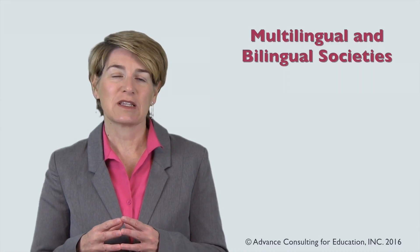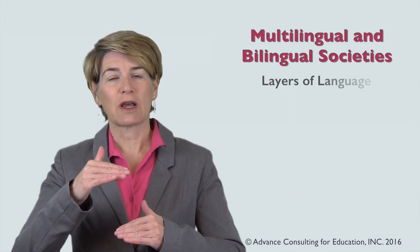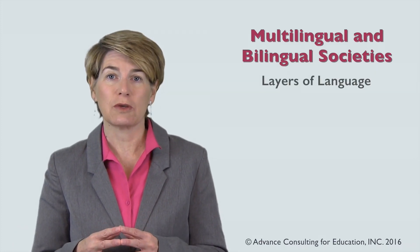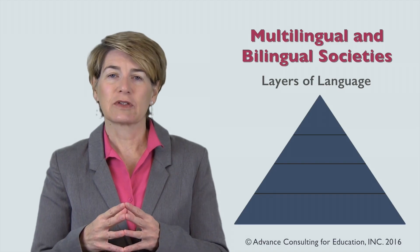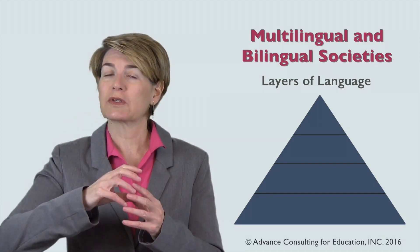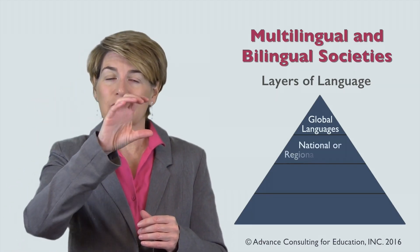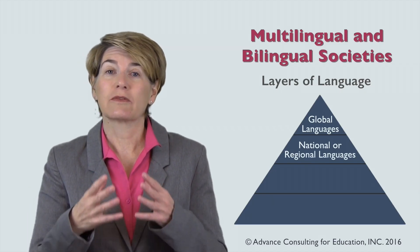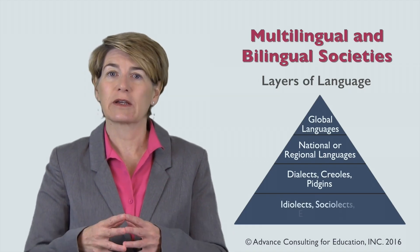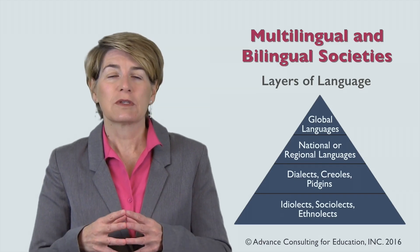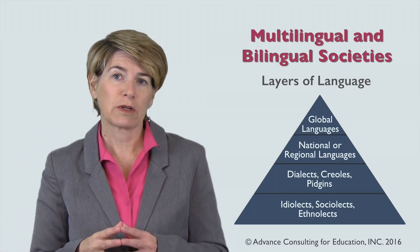One of the first things societies have to consider when putting together their language choices is which layers of a language they're going to support or encourage. If we look at a pyramid of different layers of language, societies have to decide: are they going to support a global language, a national or regional language, a creole or pidgin, and whether to encourage individual users to use their idiolect, sociolect, and ethnolect.